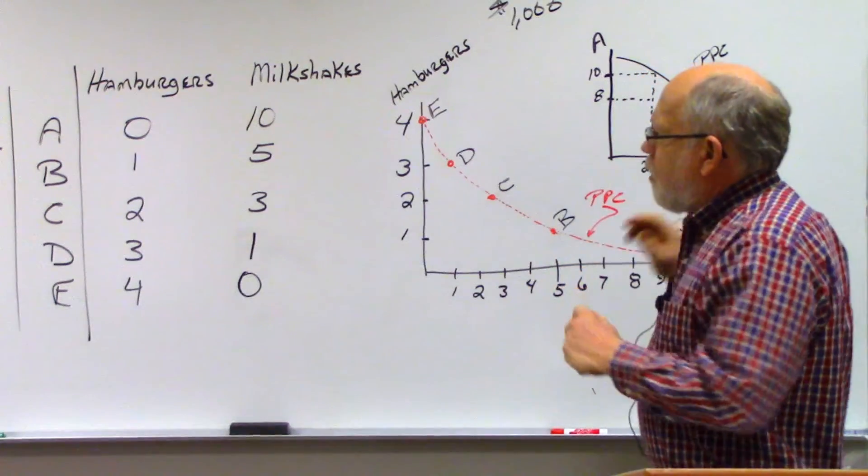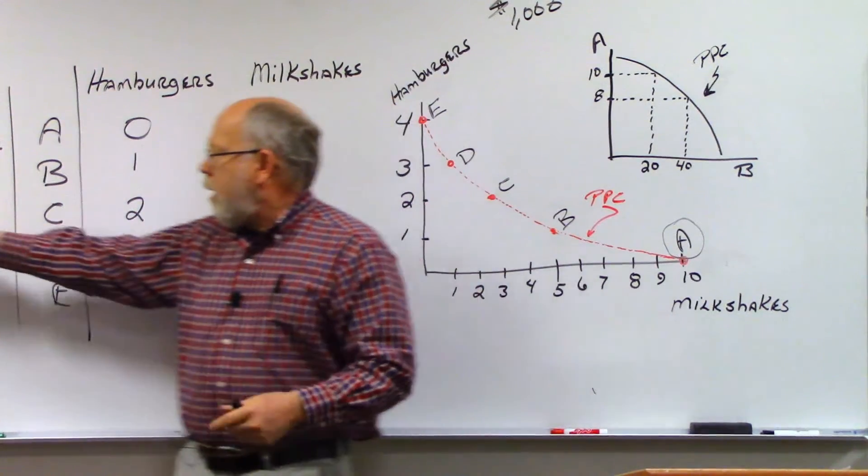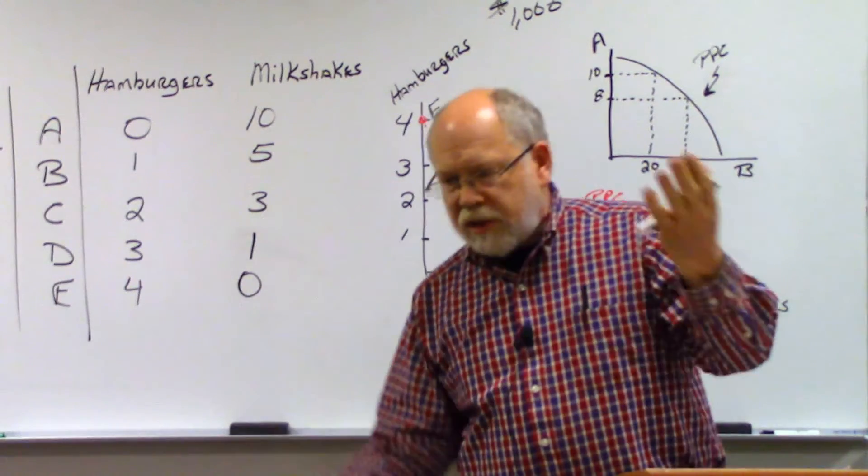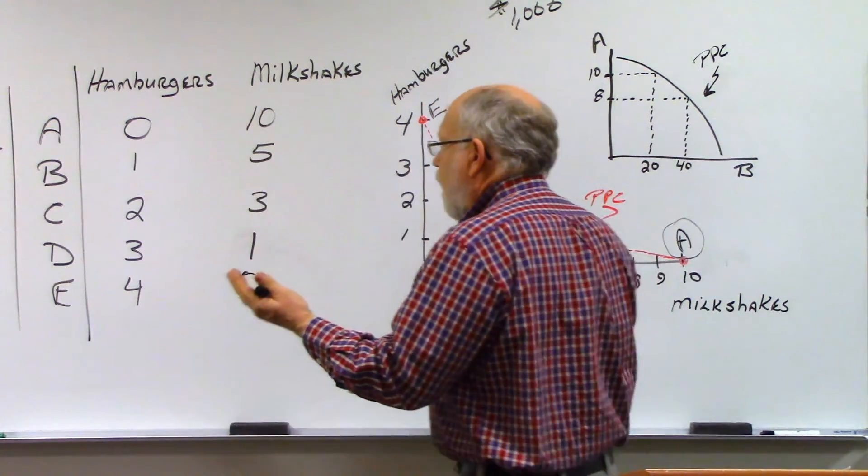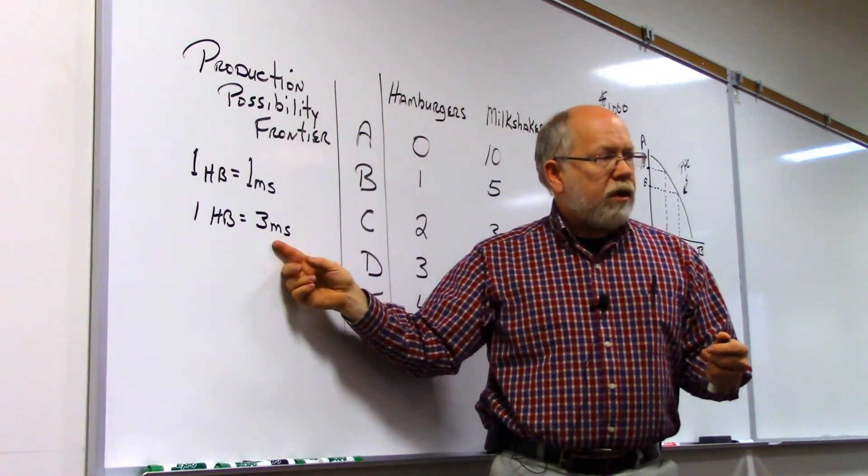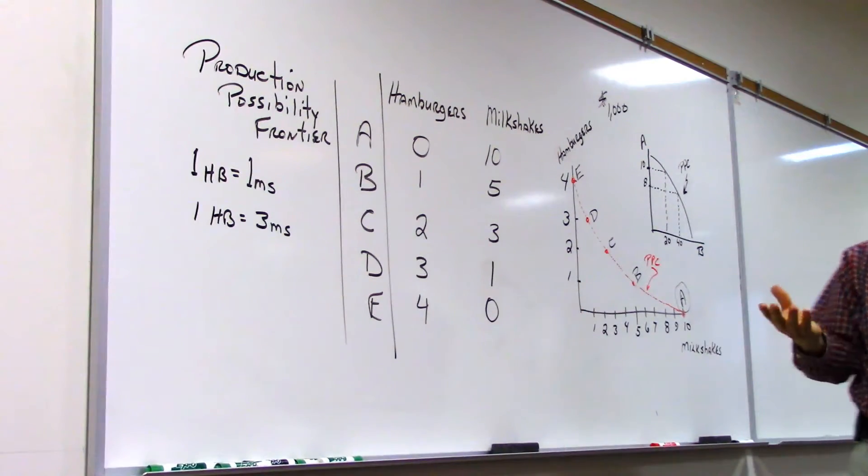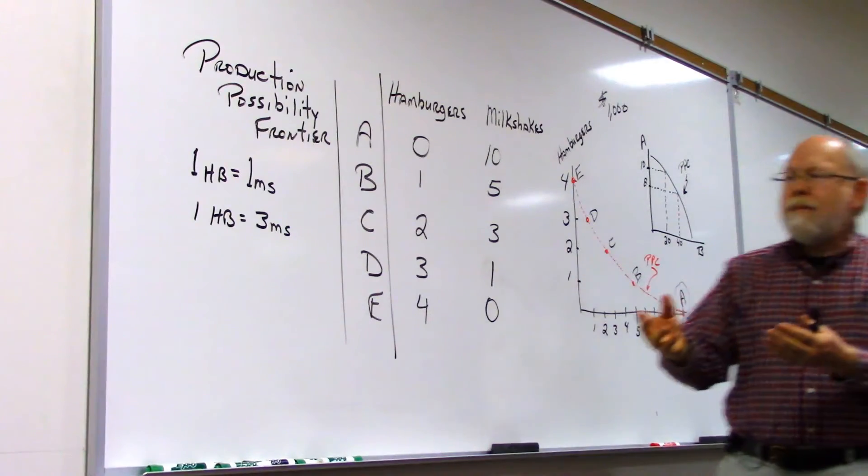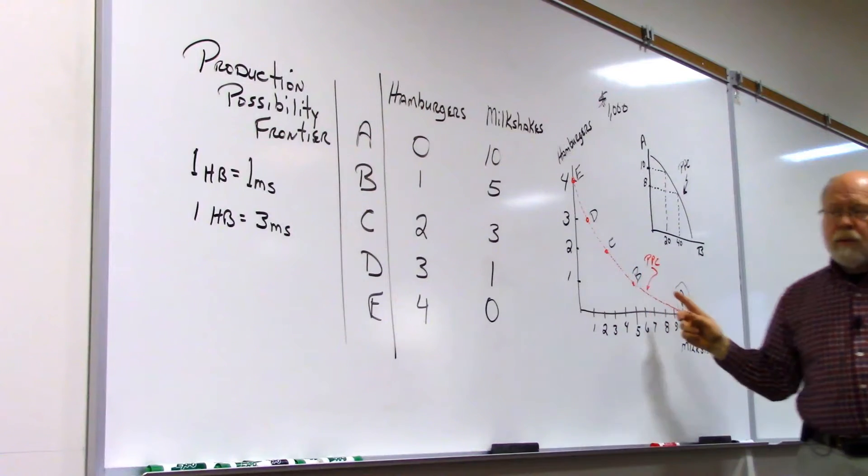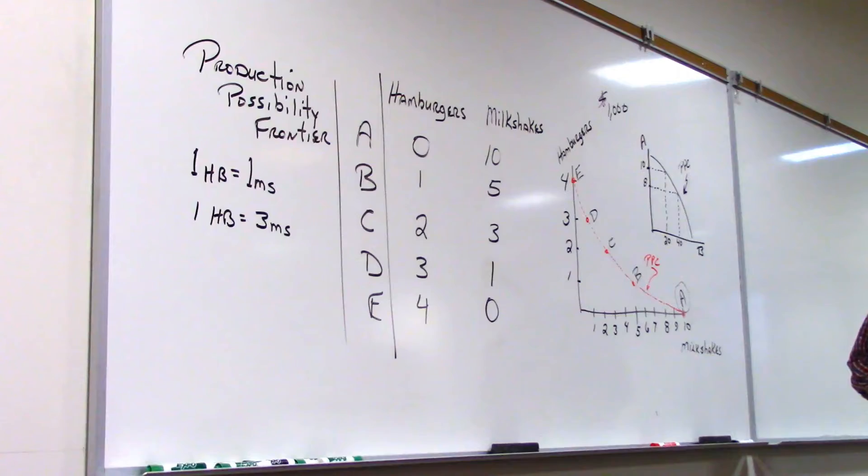But let me just change the parameters here. Let's say that we go from a market price in which one hamburger equals one milkshake, and all of a sudden the market starts to change, and prices in the market change. And now one hamburger is worth three milkshakes. The price of one and the other are changing. Now if the price changes such that one hamburger now has the same price as three milkshakes, now where should we be on our hypothetical weird looking production possibility curve?